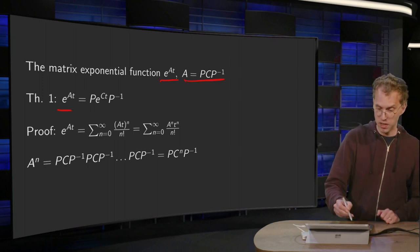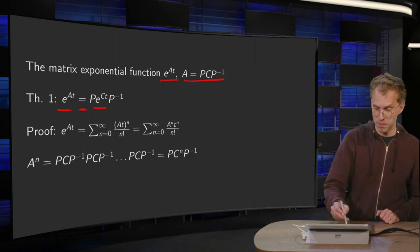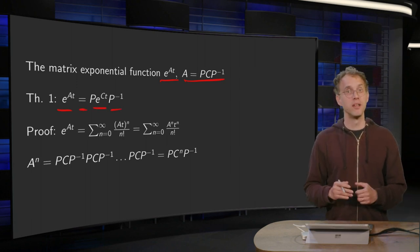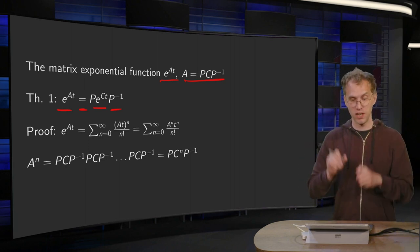Well, e to the power at is just e to the power ct, and then a P and a P inverse over there. So the only thing which changes is that you put a P and a P inverse around it, and then you have your e to the power at.